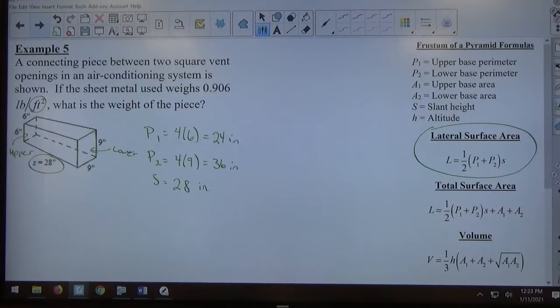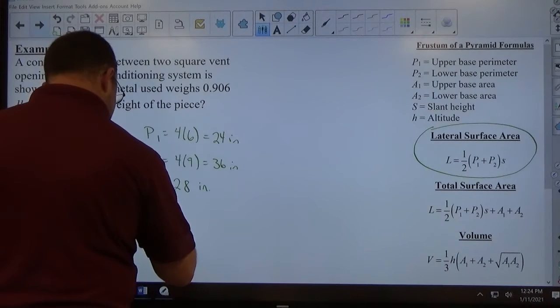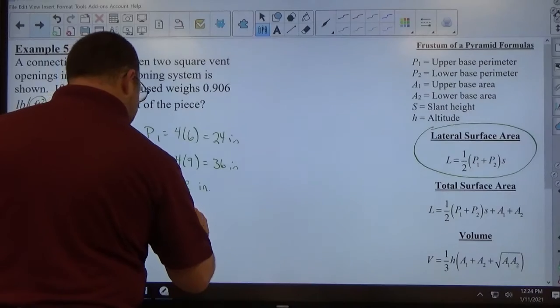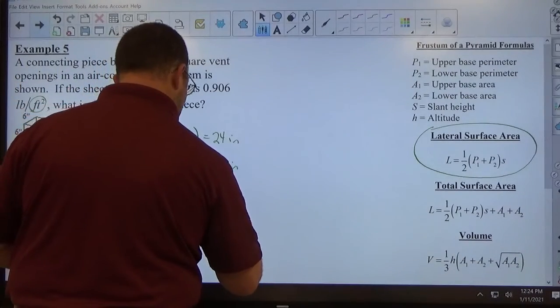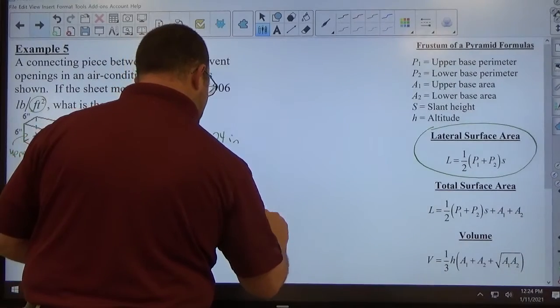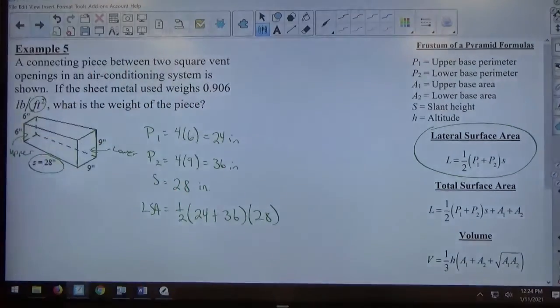So the lateral surface area of this piece of duct work is going to be 1/2 times perimeter 1, 24, plus perimeter 2, 36, times slant height, 28. Find the perimeters, find the slant height, apply the formula.